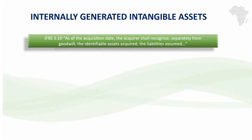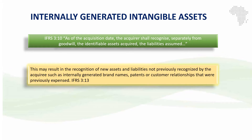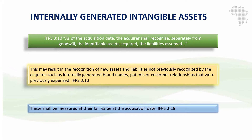IFRS 3 says that as of the acquisition date, the acquirer shall recognize separately from goodwill the identifiable assets acquired and the liabilities assumed. This principle implies that as part of the business combination, we need to identify all the assets and liabilities, and that may result in the recognition of assets and liabilities that were not previously recognized in the individual financial statements of the acquiree or the subsidiary. Those may include internally generated brand names, patents, and customer relationships, which are ordinarily expensed. As part of the business combination, we are required to recognize them and measure them separately from goodwill, at their fair value at acquisition date in line with the measurement principle in IFRS 3.